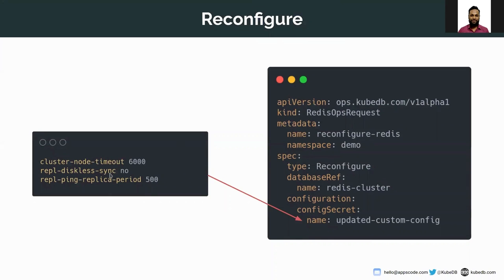I have three configuration changes. First, cluster-node-timeout was 5000 (the default value) and I want to update it to 6000. Second, replica-lazy-sync I want to set to 'no' — when set to 'no', every time a replica wants to sync it will first write to disk then transfer data over the network. When you have a fast network but slow disk, you can set this value to 'yes'. Third, replica-timeout is set to 500.